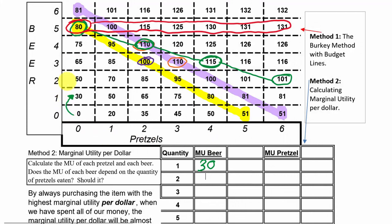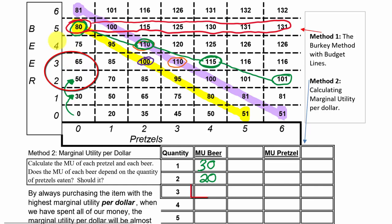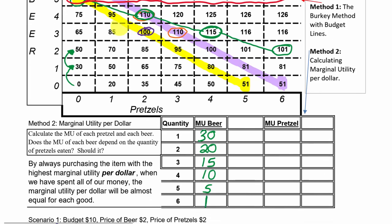When we go from one to two beers, we go from 30 happiness to 50 happiness, so the additional happiness is 20. The third beer gives us an additional 15 (50 to 65). The fourth beer gives us an additional 10, taking us from 65 to 75. The fifth gives an additional 5. And the sixth gives an additional 1 happiness, going from 80 to 81. Let's put that down in this block.